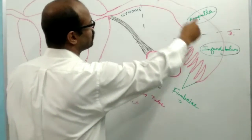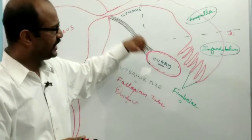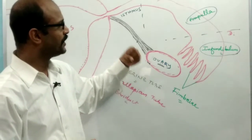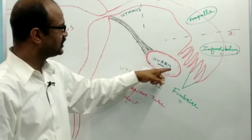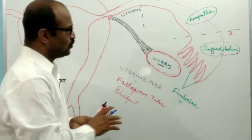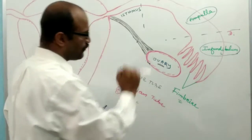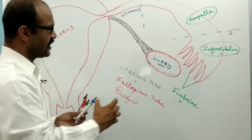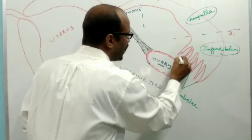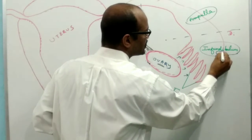The fallopian tube is provided with smooth muscles, which form contraction movements known as peristalsis. The peristalsis movement of the smooth muscles of the fallopian tube helps to capture the ovulated oocyte. The ciliated fimbriae become stiff and their cilia beat, creating an incurrent canal into the fallopian tube. The fallopian tube is also lined by mucus epithelium.